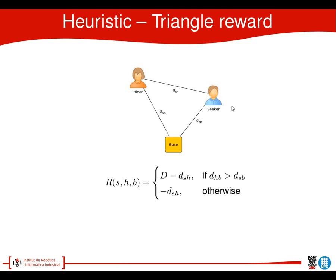In the triangle reward, we use three distances that are important in the game. The seeker wants to get closer to the hider — minimizing that distance — but at the same time wants to be closer to the base than the hider is, in order to protect it. This reward function increases when the distance to the hider decreases, and we add a constant d, which depends on the size of the map, if we are closer to the base than the hider is.